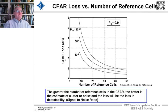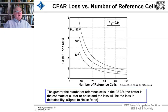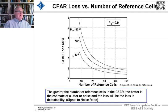This can also be graphed as CFAR loss versus number of reference cells, folding curves for PD of 0.9 and various PFA values from 10 to the minus 9 to 10 to the minus 6. The CFAR loss increases greatly when you have fewer than 20 cells. For example, with 15 cells at PFA of 10 to the minus 8 and PD of 0.9, you incur about 2.2 dB of CFAR loss. The greater the number of reference cells, the better the clutter estimate and the less the detection loss.